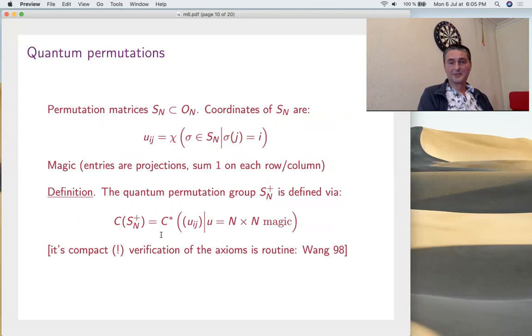This is a compact quantum group S_N^+. This algebra satisfies the axioms. We need to define delta, epsilon, S. We need to map the elements of the universal magic matrix into some other things. It's enough to prove that if U is magic, these guys form a magic matrix. That's a two-line computation. For epsilon it's clear, the unit is clearly magic. If you take the adjoint of a magic matrix, it's magic, so we're done. The axioms are satisfied. For N is 2, 3, you get nothing interesting. It collapses to C of S_N. Starting from 4, quantum permutation groups do exist, and it's involved. This algebra is infinite-dimensional non-commutative.